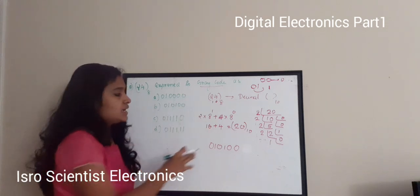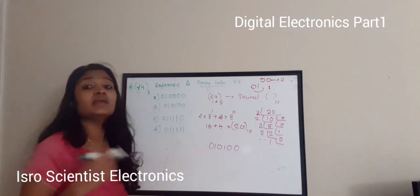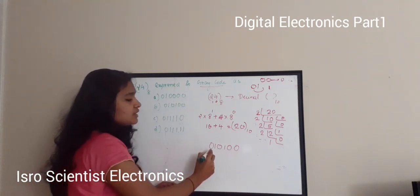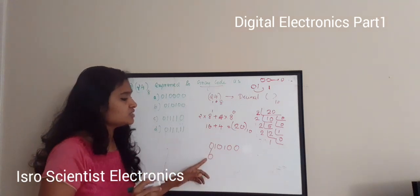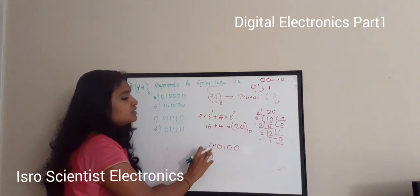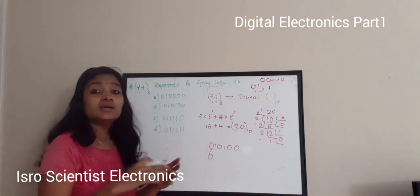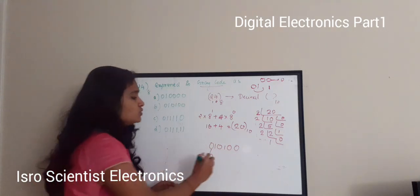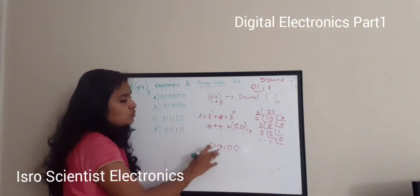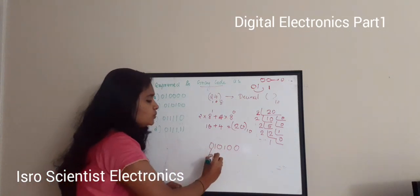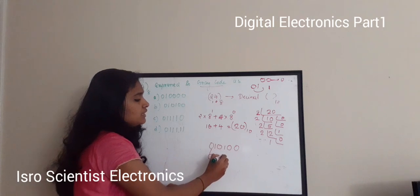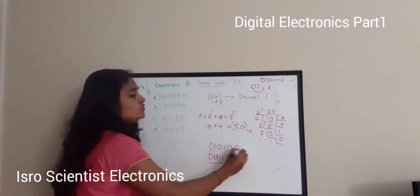To convert binary to Gray code: first, write the first bit as-is (0). Then check whether consecutive bits have a 1-bit change. 0 and 1 — there's a change, so output is 1. Then 1 and 0 — change, so output is 1. Then 0 and 1 — change, output is 1. Then 1 and 0 — change, output 1. Then 0 and 0 — no change, so output is 0. This is the Gray code representation.